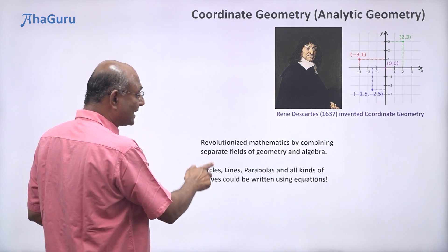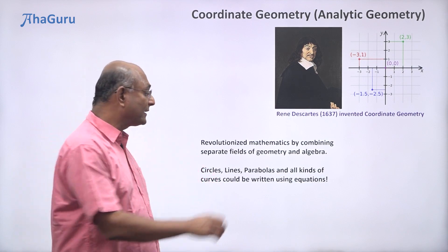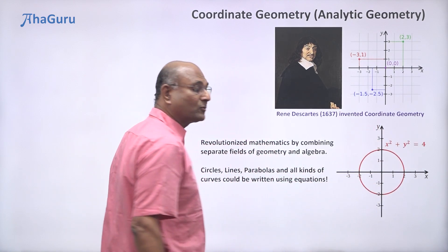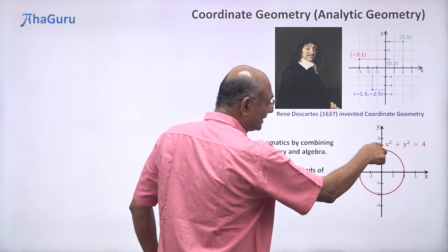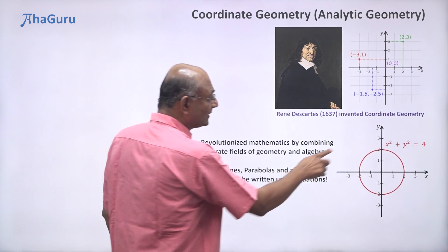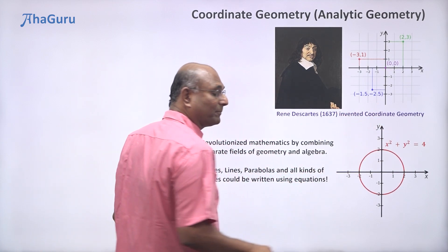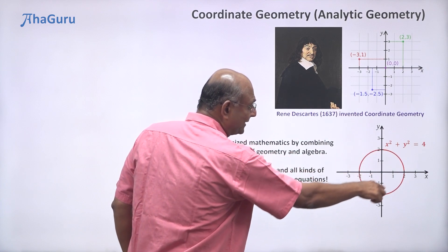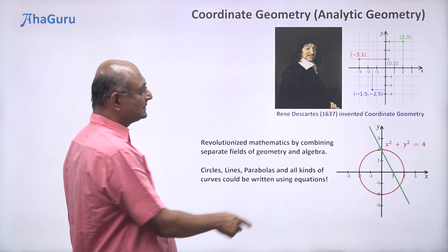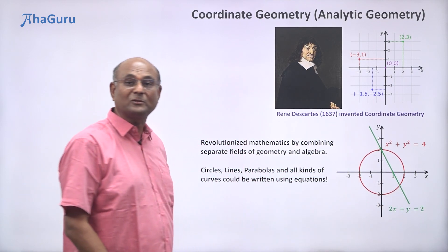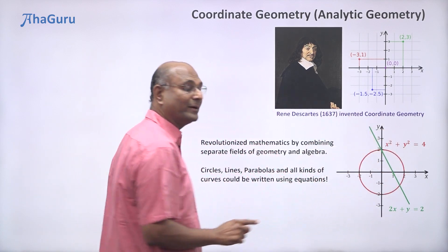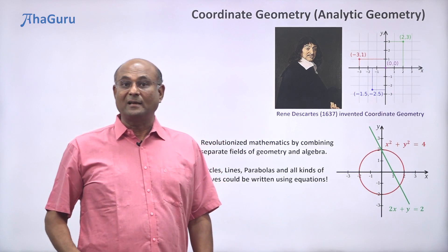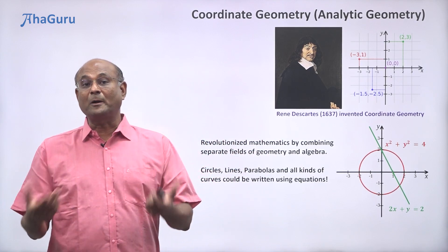How did this happen? Circles, lines, parabolas and all kinds of geometric curves could now be written in terms of equations. For example, this circle is written as x squared plus y squared equals 4. That equation represents the circle, and the circle represents the equation. In fact, the exponent notation — writing 2 on top as x to the power of 2 — was also something Descartes proposed. So circles, which are geometric shapes, have an equation associated with them. Same way, this line has the equation 2x plus y equals 2. So if shapes have equations and equations have shapes, you can solve geometry problems using algebra and solve algebra problems using geometry.